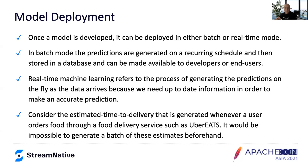In contrast, real-time machine learning model refers to the process of generating those predictions on the fly as the data arrives, because we need the information to be up-to-date in order to make an accurate prediction. Consider the estimated delivery time use case — used to generate a prediction of when a food order is going to arrive whenever you place an order on a service such as Uber Eats. It's impossible to generate a batch of those estimates beforehand, so real-time machine learning model deployment is the only real solution.